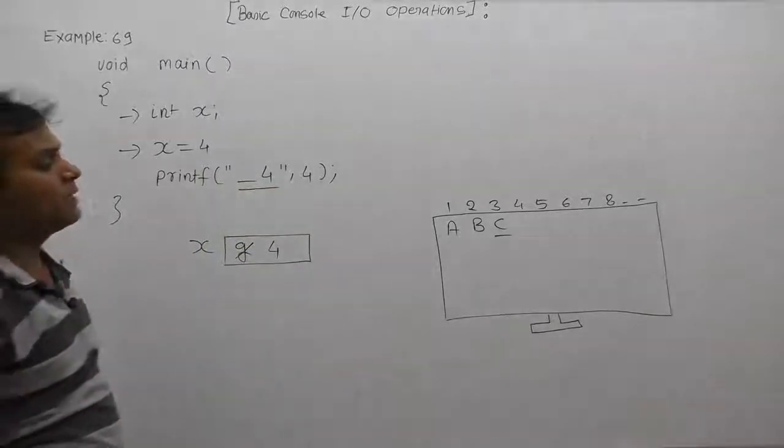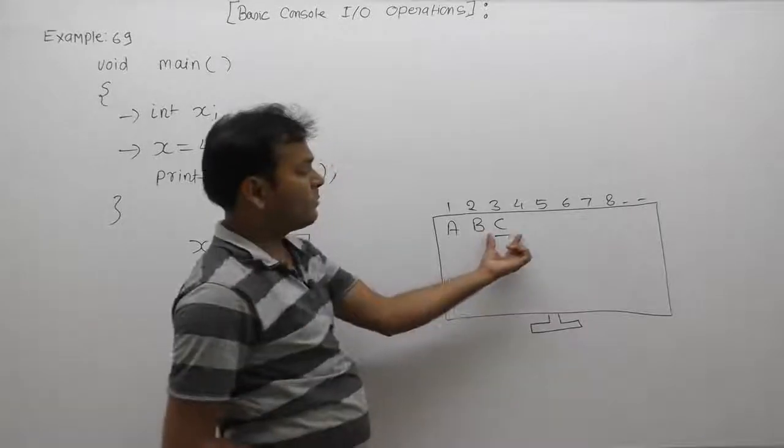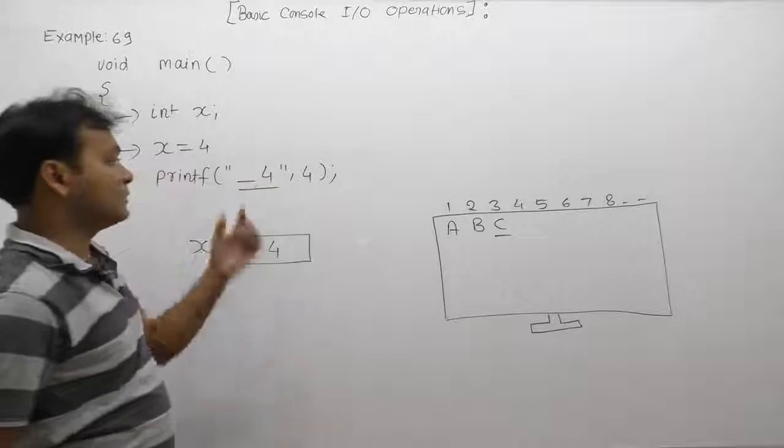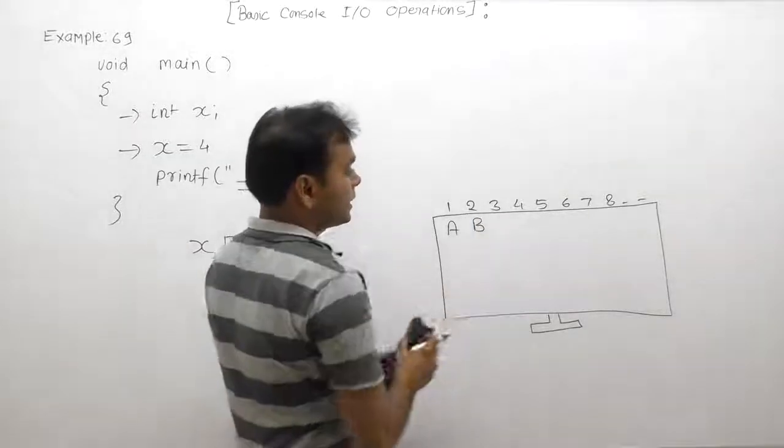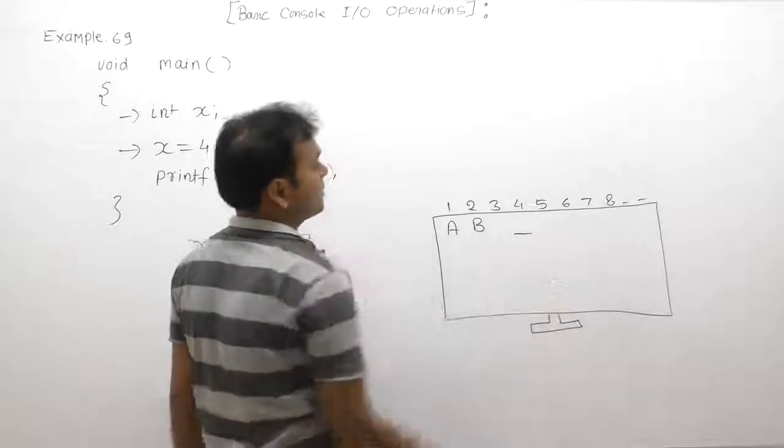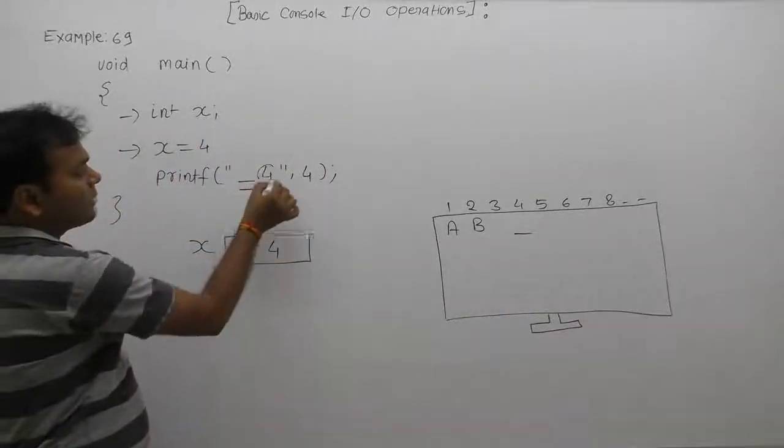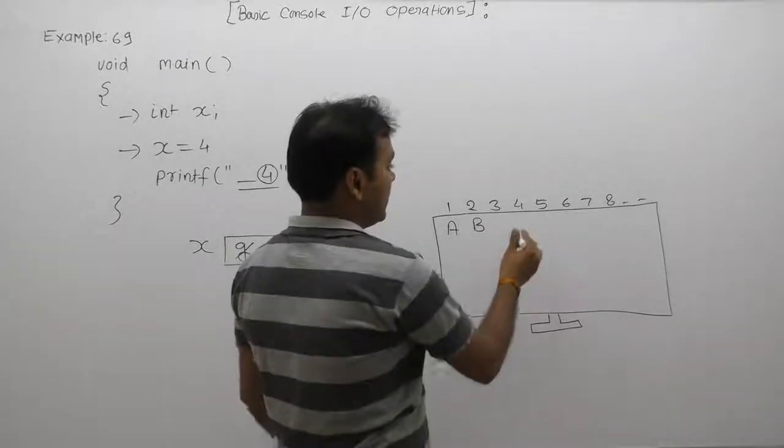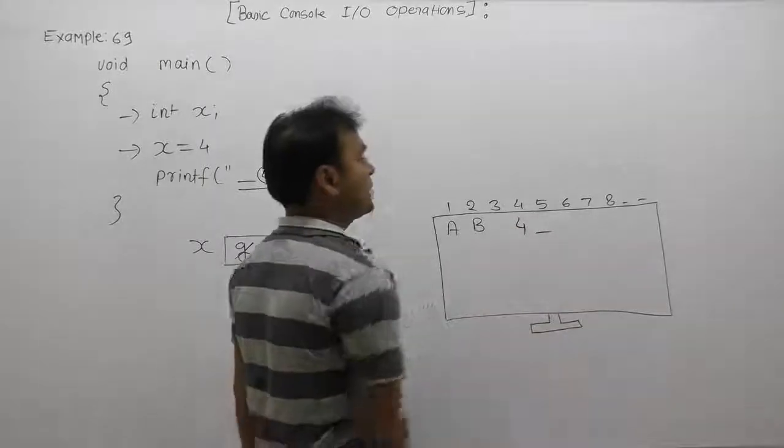In place of the current position, the current position already found character c. Therefore c is replaced by this space. Then after displaying the space, the cursor will be moved to the next position. In the next position, it will display the character value as four on the current position. Then the cursor will be available on the next one.